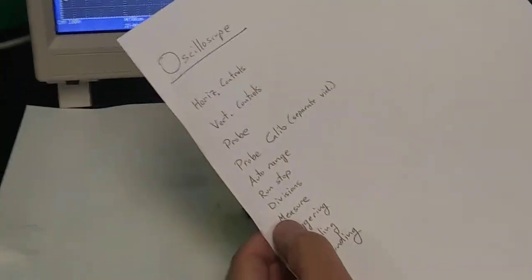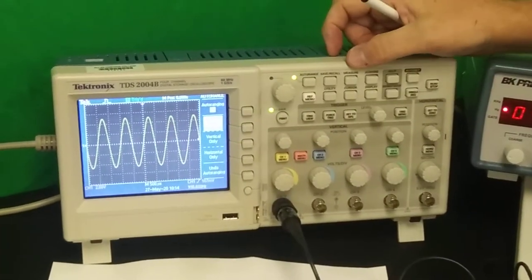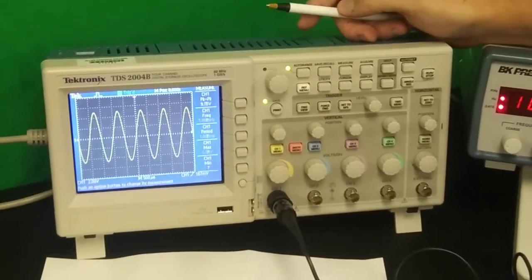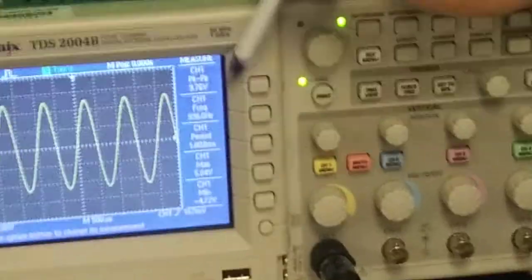So if you get a signal that's floating all over the screen, sometimes you may need to hit run stop and that pauses things and takes a screen capture at one split second in time and that can help you read a messy signal. Usually that's caused by bad triggering. Alright, so now it's going again. We've talked about divisions.